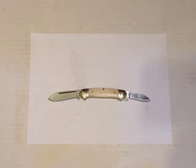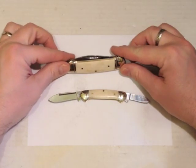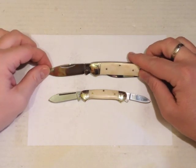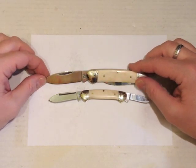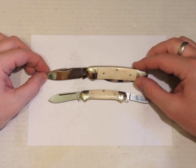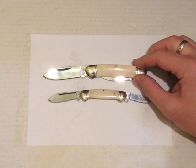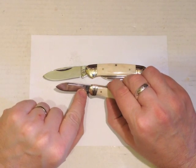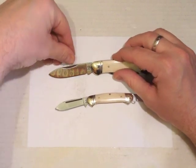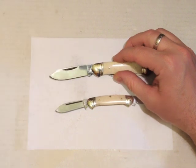We could also compare it to the regular size Rough Rider Canoe, which is about 92mm closed and has a much more substantial blade. The only significant difference between the two apart from the size is the smaller mini canoe has a straight nail pull, whereas the larger or regular size has the crescent shaped nail pull.